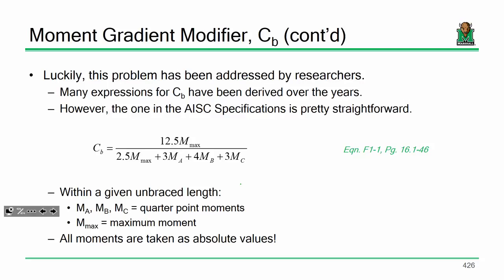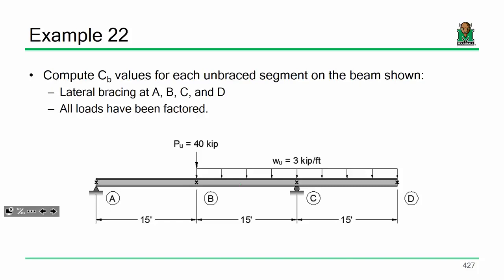Recall that C sub B serves to amplify your flexural moment capacity based on the fact that the moments are not uniform within a particular unbraced length. The equation is pretty straightforward. All you need are quarter-point moments within a given unbraced segment, as well as the maximum moment. Regardless, all of the individual values are taken to be absolute values. So everything that goes into the equation should be positive.